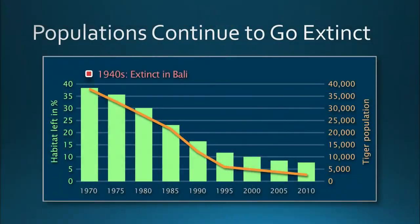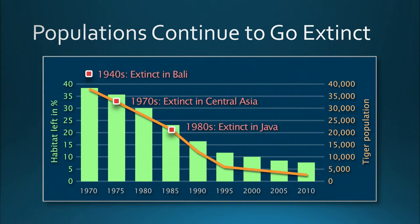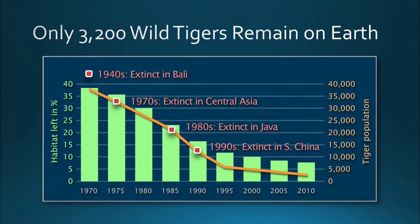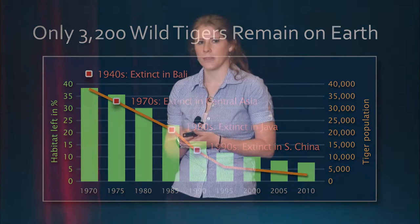There have been these local extinctions. In the 1940s, tigers went extinct in Bali. In the 1970s, they went extinct in Central Asia. In the 1980s, they went extinct in Java. And in the 1990s, they went extinct in South China. And every time we've lost one of those populations and shrunk our remaining ones, we're reducing that genetic diversity that makes tigers unique and that will give them the best chance of surviving in the future.